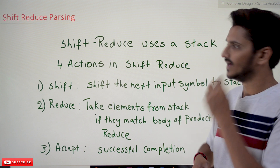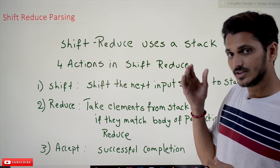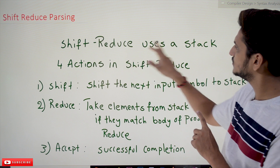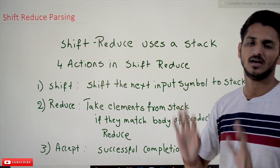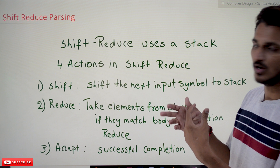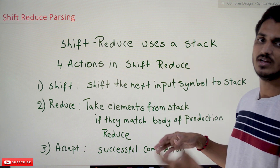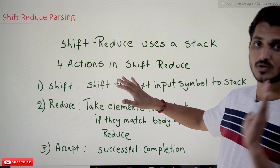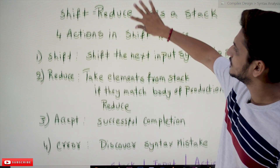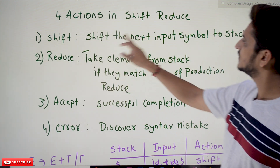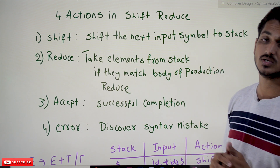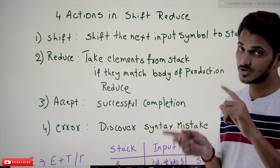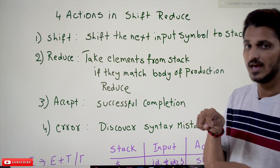In order to identify whether the given string is accepted or not, we use the shift-reduce technique. In shift-reduce, we use an extra stack to identify whether the given input is accepted or not. In shift-reduce parsing we perform four actions. The first action is shift — shift the next input symbol onto the stack. The second action is reduce.